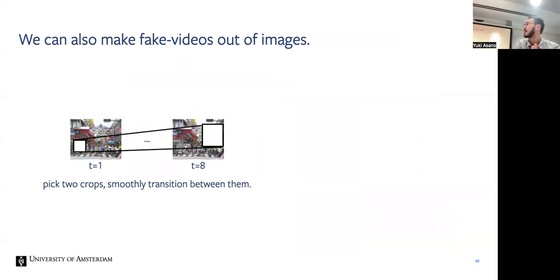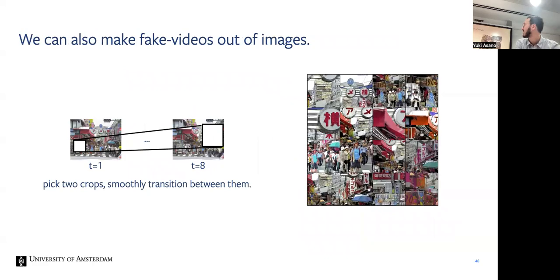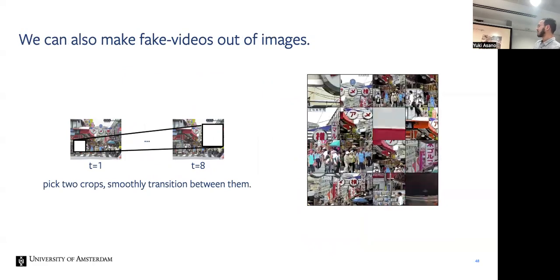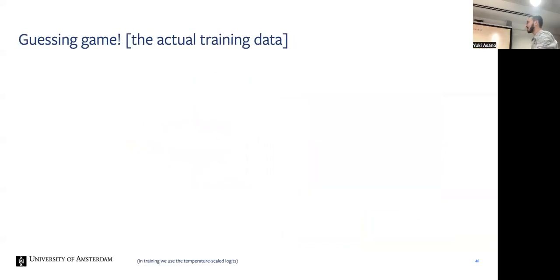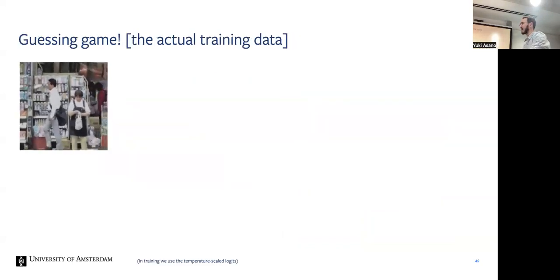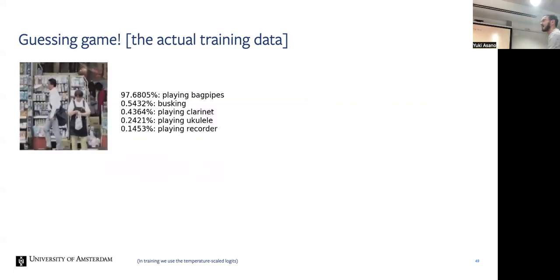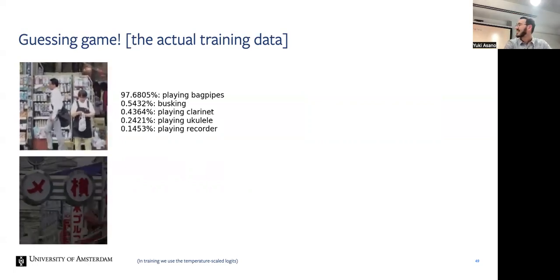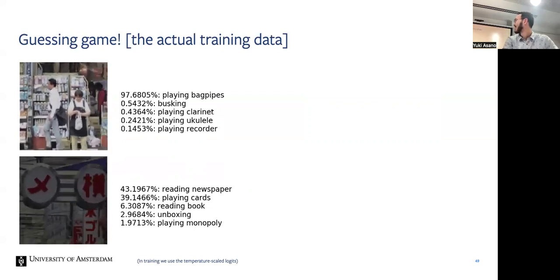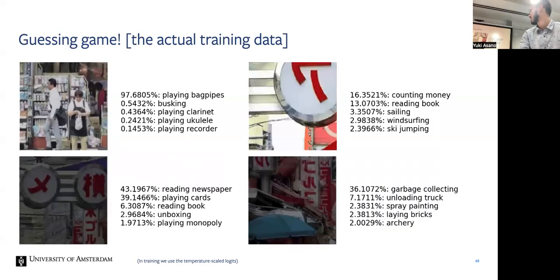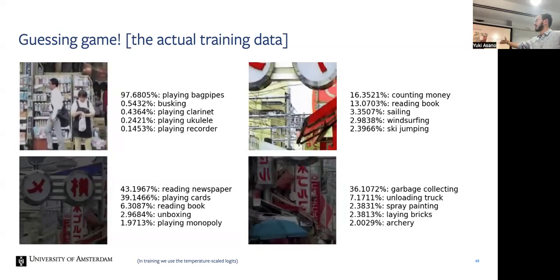It gets even funnier because with one image we can sort of make fake videos by simply taking two crops and smoothly interpolating between them. You get these sort of fake videos which are clearly not videos but they're good enough for inputting them into a video backbone like S3D or X3D. And then if you put them through a model that was pre-trained on Kinetics, so all these 400 action categories, you get these sort of outputs. So the teacher is extremely sure that this model, this video, is depicting the action of playing bagpipes. And with this one, if you want to take any guesses? It's reading newspapers, of course, right? And yeah, so it's really hard to tell, it really doesn't make a whole lot of sense. But this is all the training data, I mean a subset, but this is all you have. You have your input data and you have the thing that you're trying to match at the end.